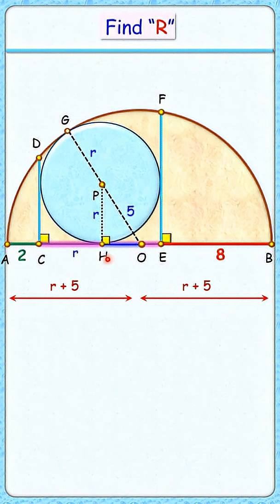In this right angle triangle, applying the Pythagorean theorem, we'll get the radius of this blue circle as 4 centimeters, and that's our answer.